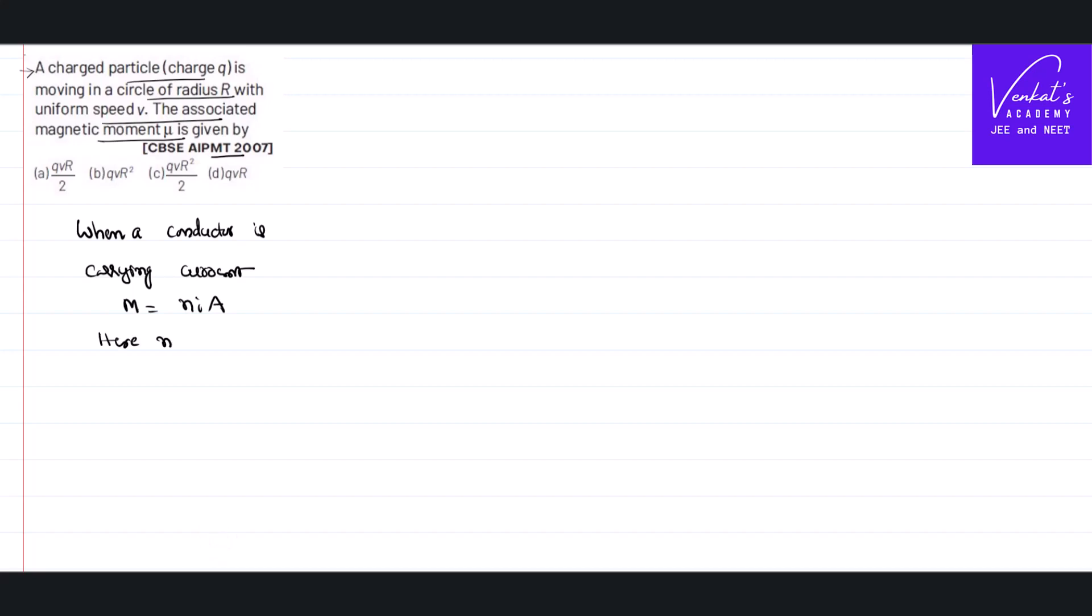Here, number of the turns is 1, being a circular coil area equal to pi r square. That implies magnetic moment M which is represented as mu in this problem as i into pi r square.